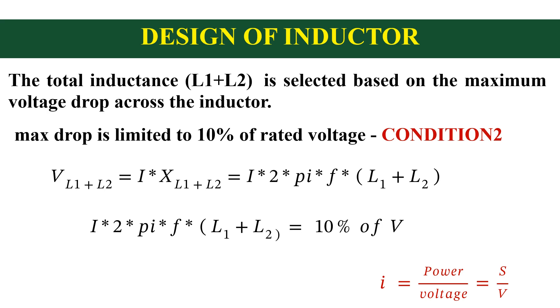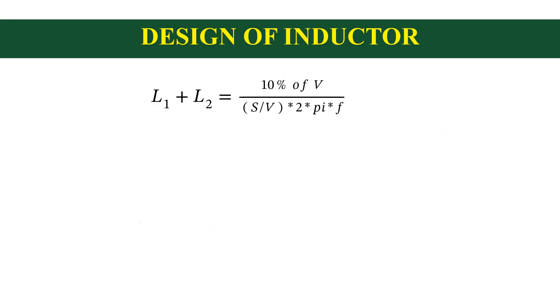Substitute in the equation, we will get L1 plus L2 is equal to 10% of V divided by S by V into 2 pi f. That will give L1 plus L2 is equal to 0.1 V square divided by S into 2 pi f.